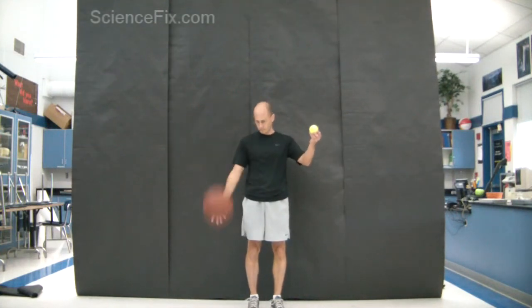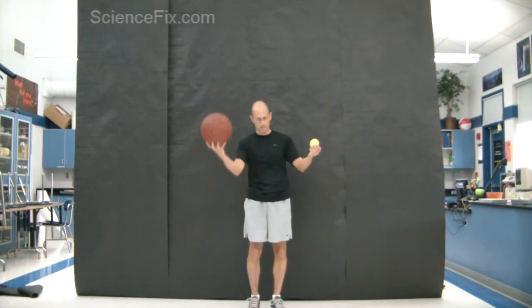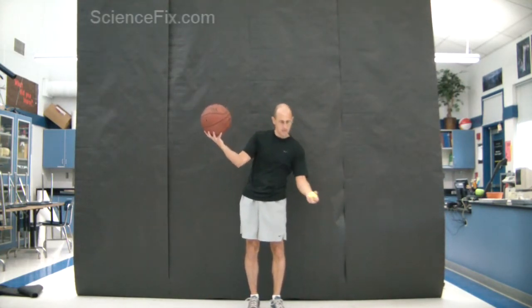Here we have a basketball and a tennis ball. You can see when they are dropped from a certain height they will bounce back up to a certain height.